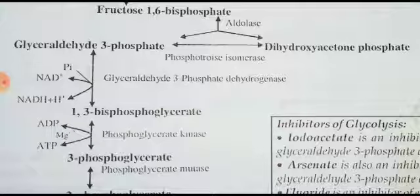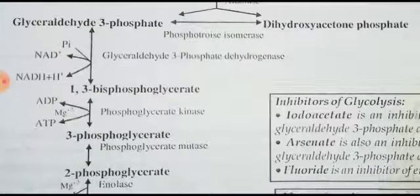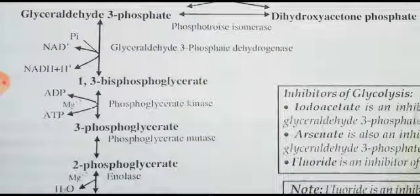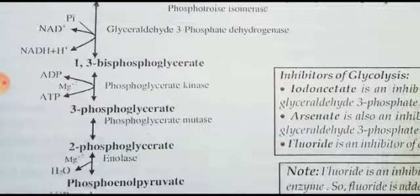DHAP (dihydroxyacetone phosphate) is converted to glyceraldehyde-3-phosphate, giving two molecules of glyceraldehyde-3-phosphate total. From this point onwards, everything should be counted as two molecules. Step 5: glyceraldehyde-3-phosphate is converted to 1,3-bisphosphoglycerate. NAD⁺ is converted to NADH + H⁺, meaning hydrogen is removed from glyceraldehyde-3-phosphate. The enzyme is glyceraldehyde-3-phosphate dehydrogenase, since hydrogen is removed from that compound.